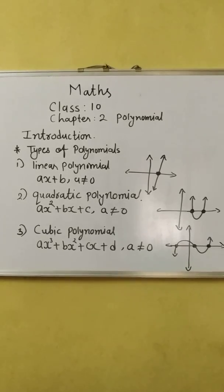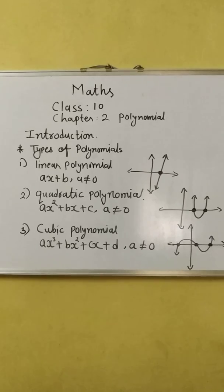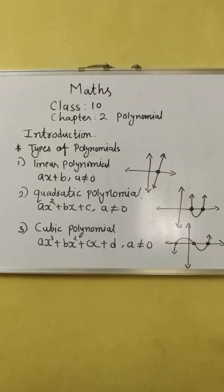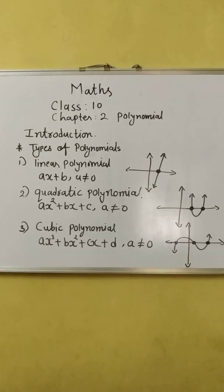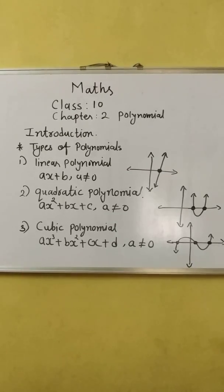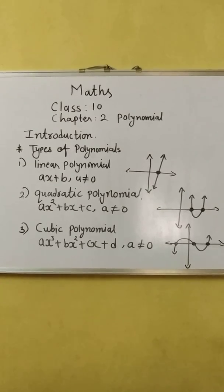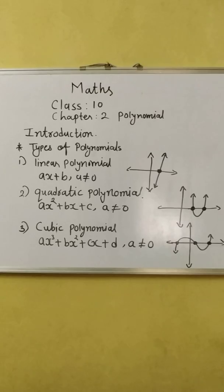The second is quadratic polynomial, which has general formula as ax² + bx + c where a cannot be 0. As I told you when a will become 0, it will become linear polynomial. The quadratic polynomial has degree as 2 and you can see the figure that it intersects x-axis maximum at two points and minimum it can be 0 or 1.